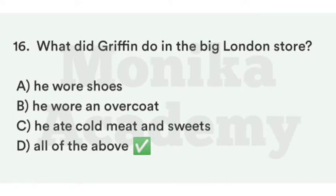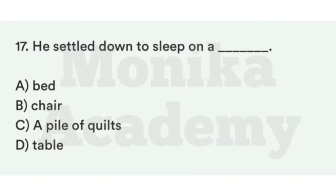Question 17: He settled down to sleep on a ___. Griffin ने store में पहुँचकर कपड़े लिए, खाना खाया, coffee पी, और सोने के लिए जगह चुनी. Option A: Bed. Option B: Chair. Option C: A pile of quilts. Option D: Table. The correct answer is C, a pile of quilts — He settled down to sleep on a pile of quilts, उसने रजाई के ढेर पर आराम से सोना चुना.